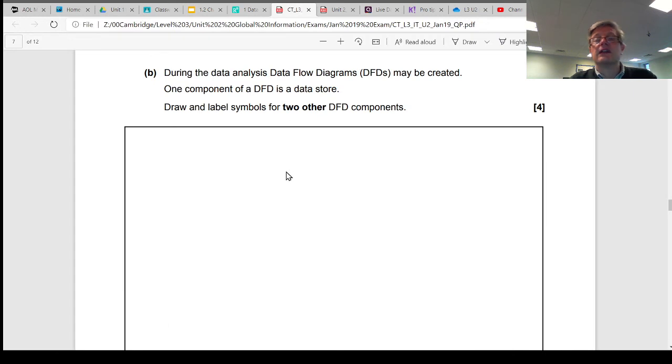If we have a look here, we can see this is a question that came up in one of the previous exams. It tells us that during the data analysis, data flow diagrams might be created. One component of a DFD is a data store. The question wants us to draw and label using the proper shapes that we've already looked at, those universally accepted recognized data flow diagram symbols, for two other components. Obviously, if you write the symbol for a data store, you're going to get no marks. They want two others. So if we look at the responses, it's not difficult at all.